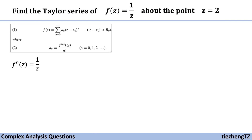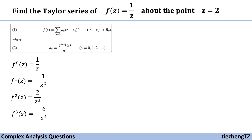The 0th derivative is itself, which is 1/z. The first derivative becomes -1/z². The second derivative is 2/z³, which is positive. The third derivative becomes -6/z⁴. Therefore, it seems we can get the general form of the nth derivative of f(z), which is (-1)^n times n factorial over z to the power of (n+1).